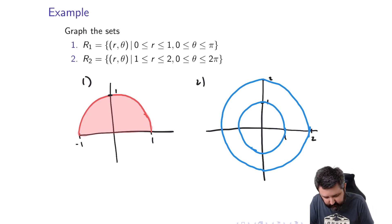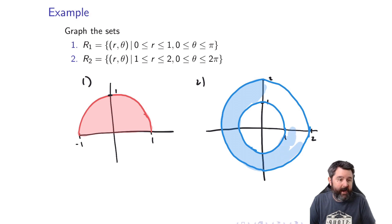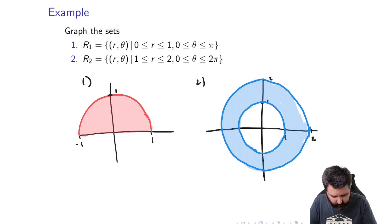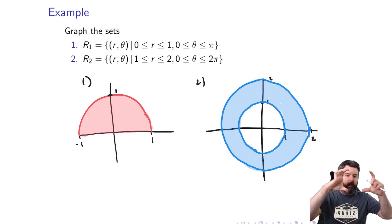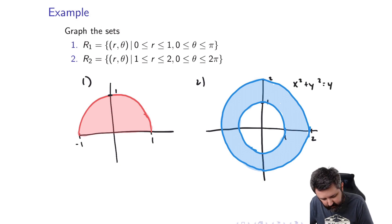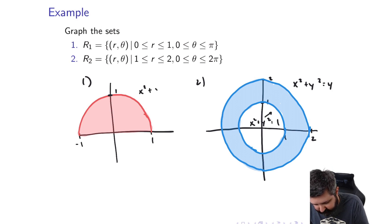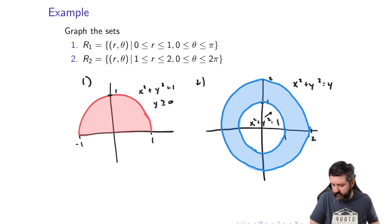So anything in here has r between 1 and 2, and the angle from the point to the origin is between 0 and 2π — basically every point within a full 360 degrees of the origin. That's what this whole set looks like: it's an annulus, the region between the circles with radius 1 and radius 2. The circle x²+y²=4 has radius 2 and x²+y²=1 has radius 1.